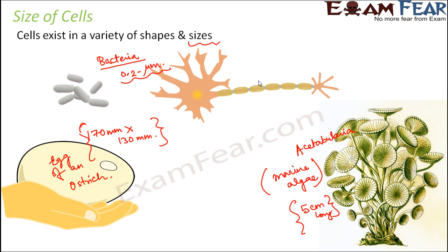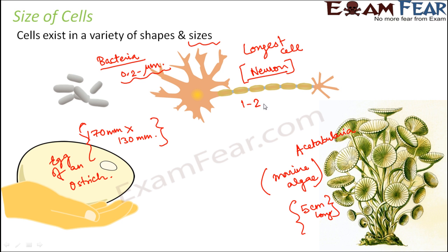If you talk about a long cell, the longest cell is the nerve cell or neuron. The ostrich cell is the biggest cell in terms of overall size, but when you talk only about length, the neuron is the longest cell — its length is around 1 to 2 meters. Acetabularia is also quite long.